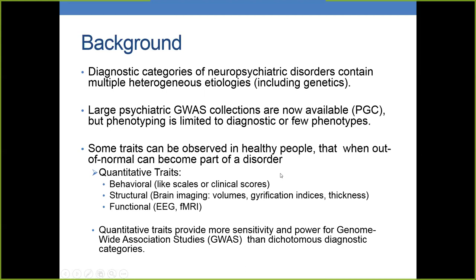Structural MRI — for example, volumes, gyrification indices, thickness from brain imaging — are very strong quantitative traits that are very related to disorders. Functional measures from EEG and fMRI can be measured in patients and controls also. These quantitative traits provide a very sensitive line to detect differences between cases and controls, giving a lot of power for genome-wide association studies, much more than dichotomous diagnostic categories.